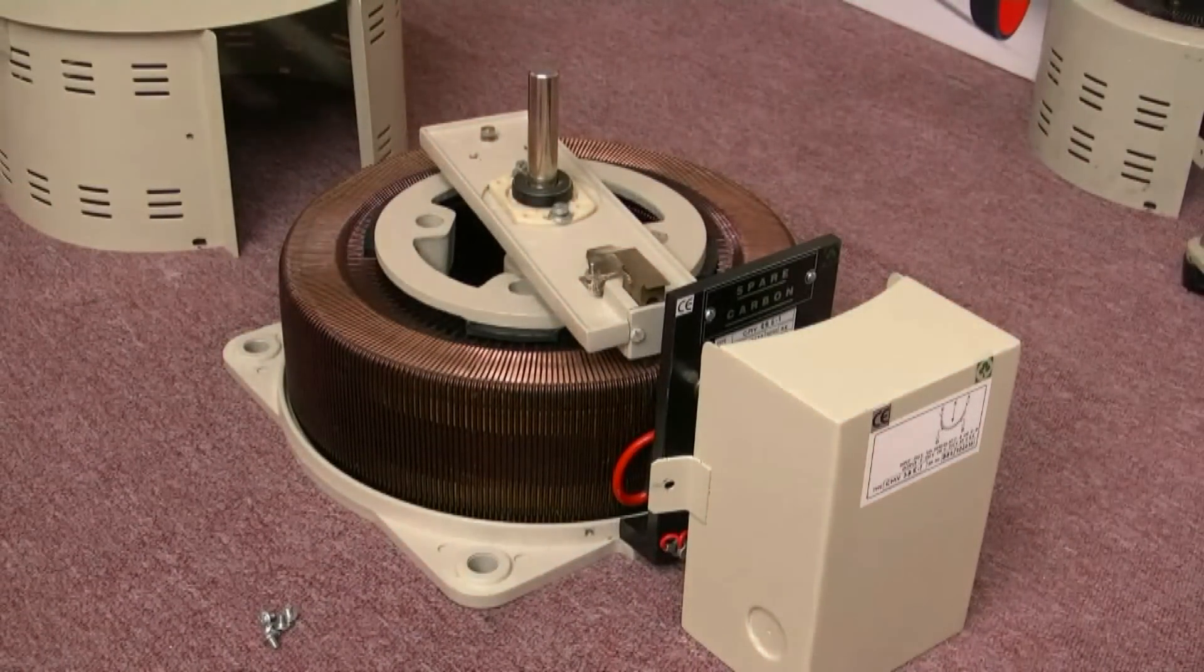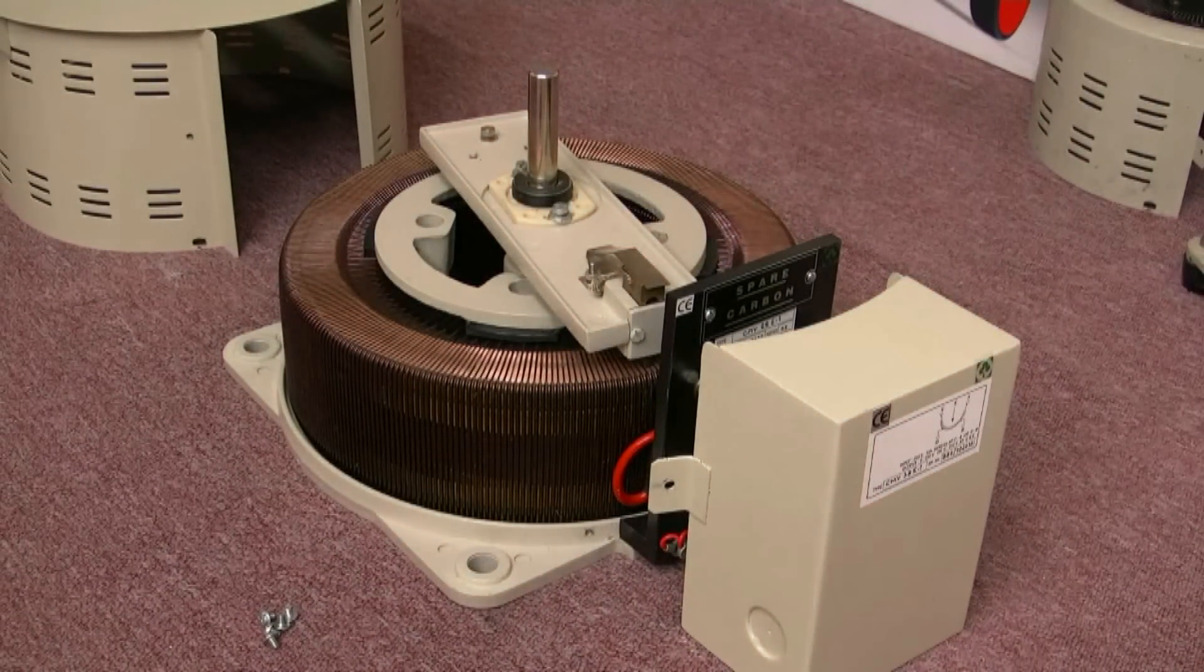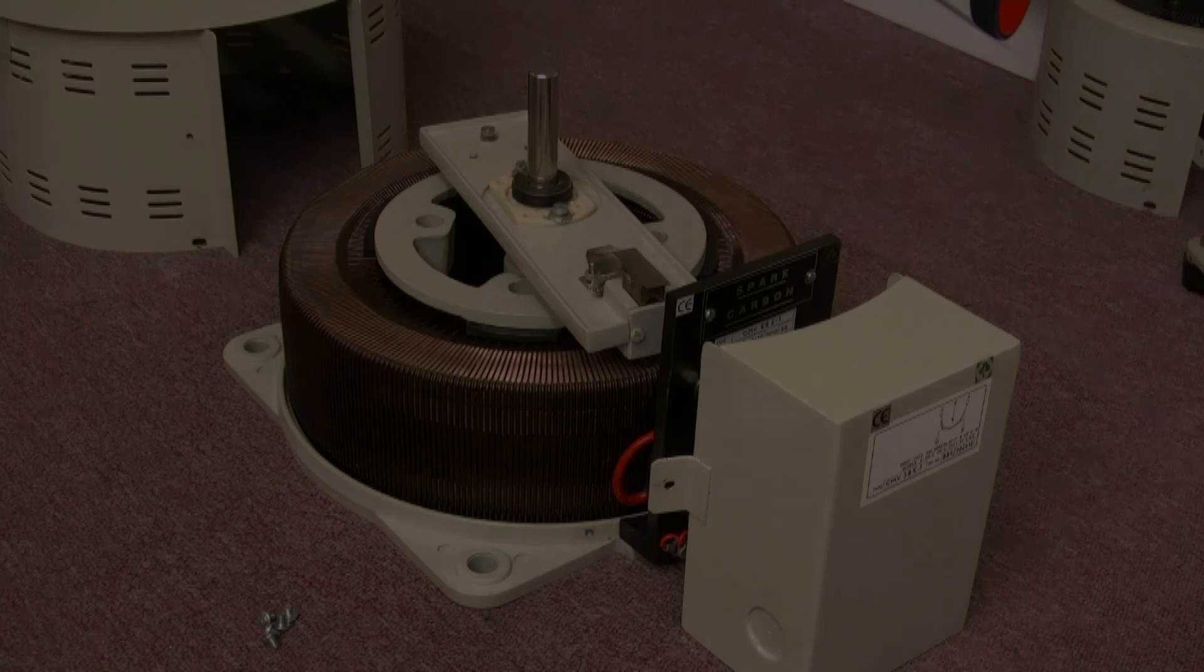We've got 28 amps now to play with, continuous. Inrush current's a little bit worrying. Well, it seems that we've tested this new Variac, and it doesn't complain until we get to 80 amps, which means double the amount of fun.